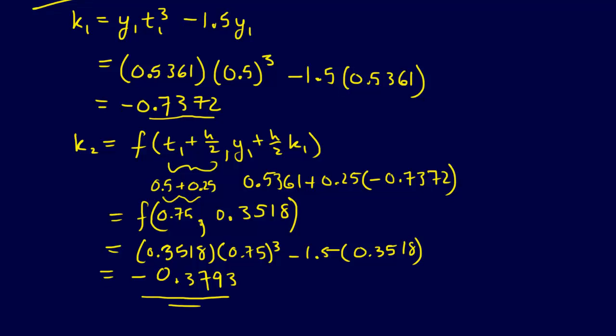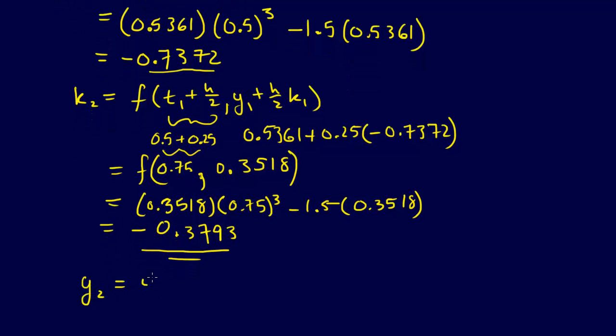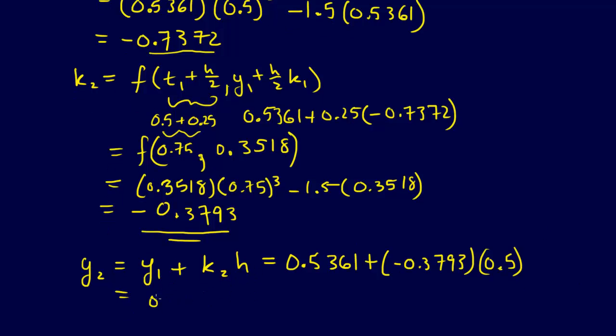We remember from our original equation that Y2 equals Y1 plus K2H. So our Y1 was 0.5361 plus our K2 is minus 0.3793 times 0.5, and that is going to equal 0.3465. So that's Y2, and that's a good start. You just keep stepping through, and this is how you do the midpoint method. That's Mike Johnson. Thank you.